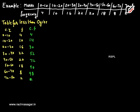The cumulative frequencies are calculated as: 4 as it is, 10 plus 4 gives 14, 16 plus 14 gives 30, 22 plus 30 gives 52, 20 plus 52 gives 72, 18 plus 72 gives 90, 8 plus 90 gives 98, and 2 plus 98 gives 100.